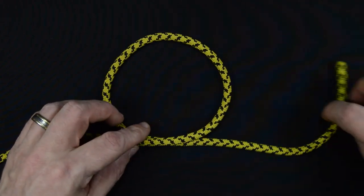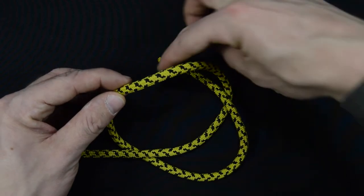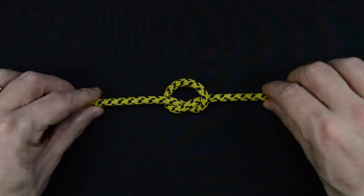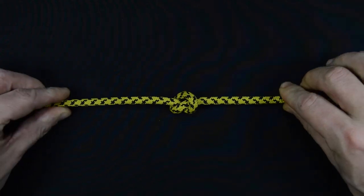And again, make an overhand loop, tuck the working end through the loop, pull the working and standing ends in opposite directions to tighten the knot.